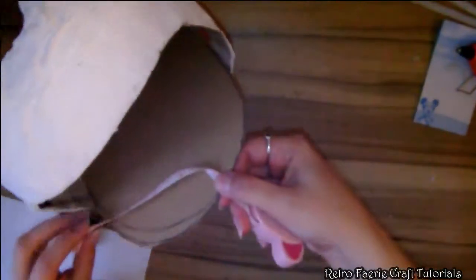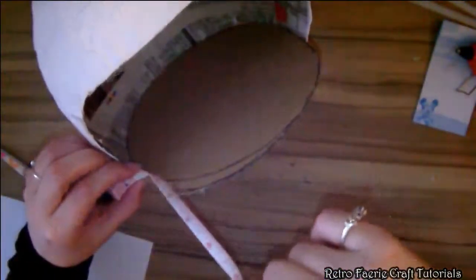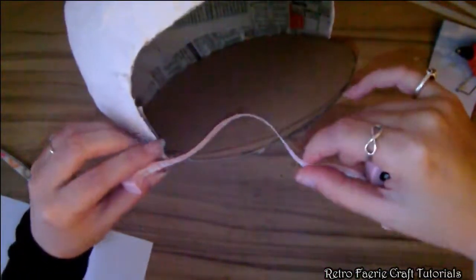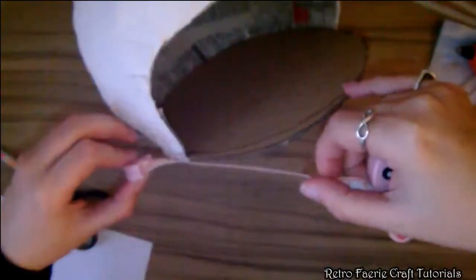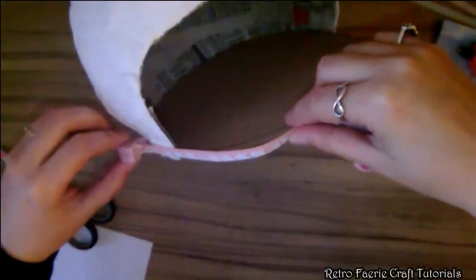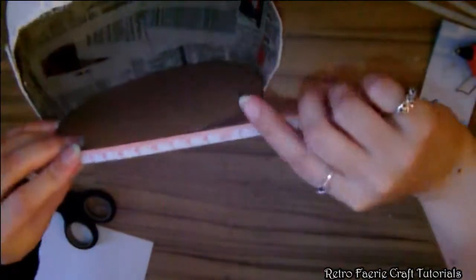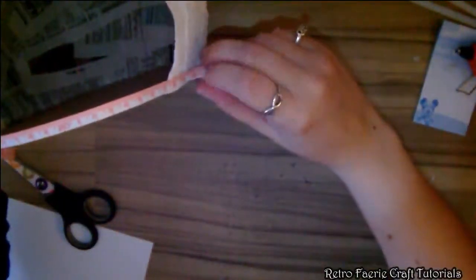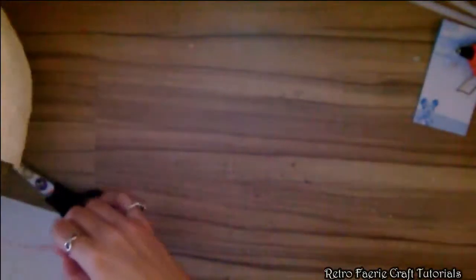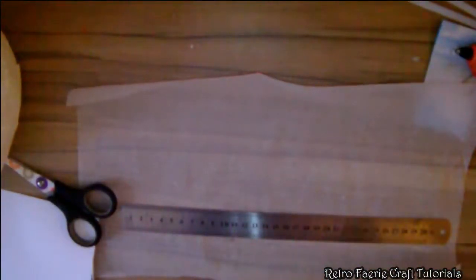Once you've done that you want to make the face guard. For this you're going to need to measure how long you want it, so you're going to start from a bit onto the helmet and then all the way around the front and a couple of centimeters on the other side as well.